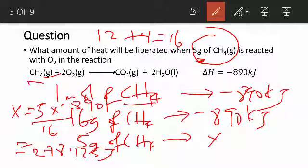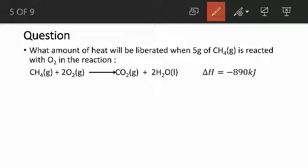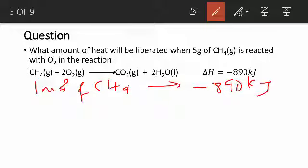So let's go over that again. We see that 1 mole of methane, 1 mole of CH4, is reacting, will liberate minus 890 kilojoules of heat. And 1 mole of CH4 means 16 grams. 16 grams is the molar mass, will liberate minus 890 kilojoules.